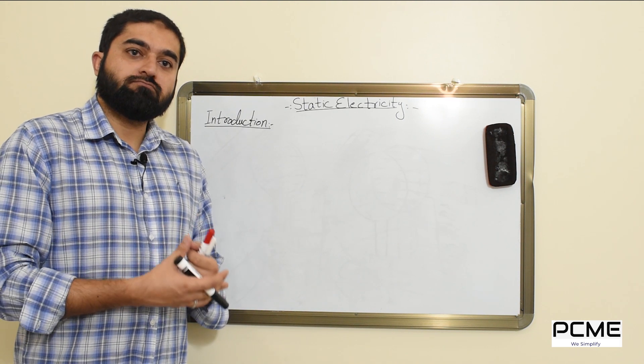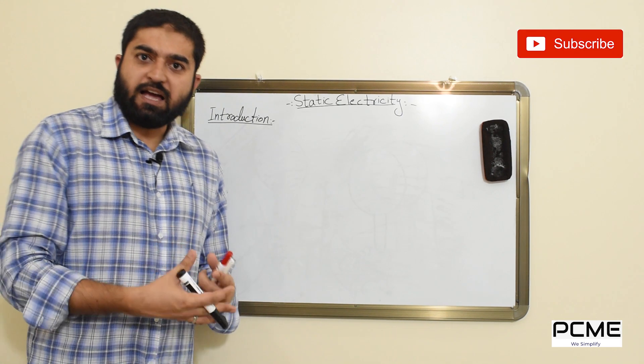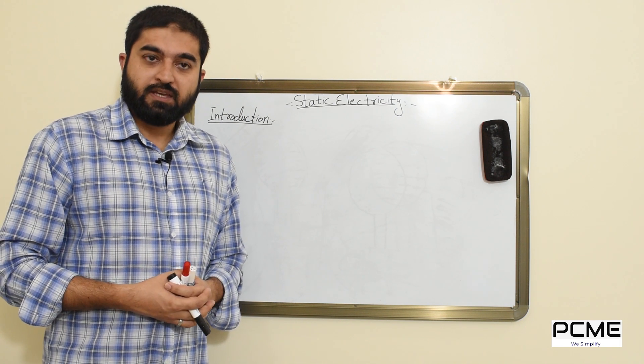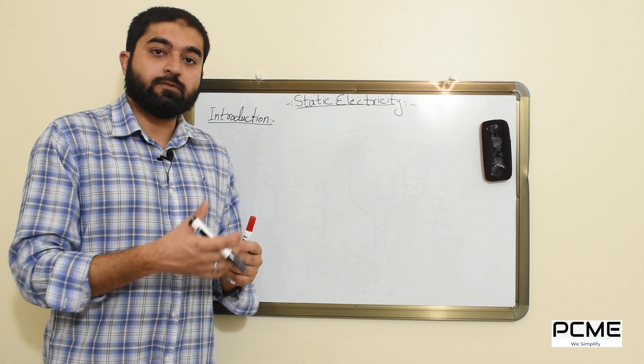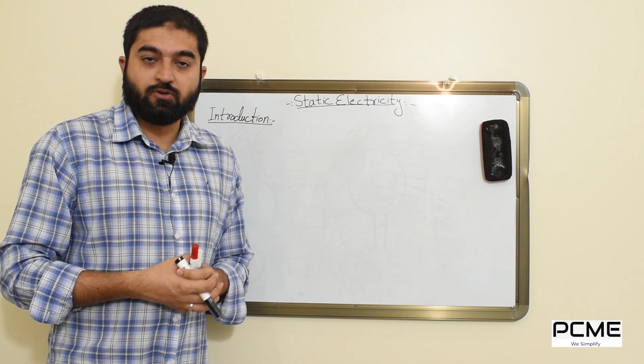Now let's try to understand how the charge is developed. As I mentioned before, friction is the major cause of static electricity. That's why you get those electrical shocks whenever you come in contact with another object or another person.